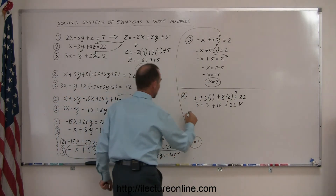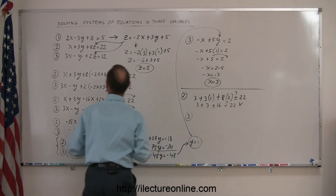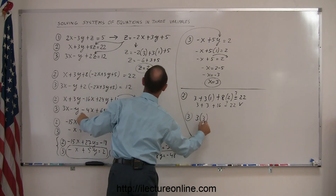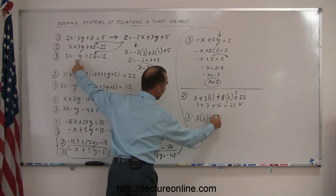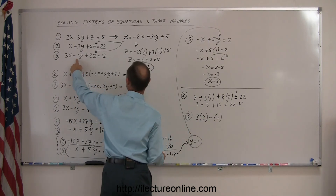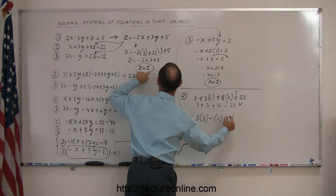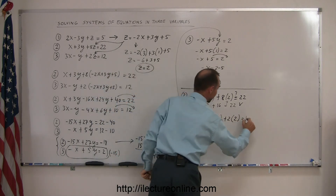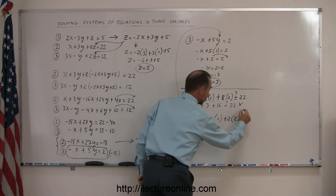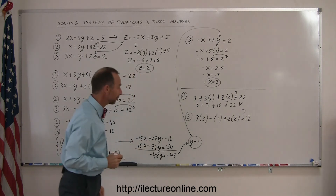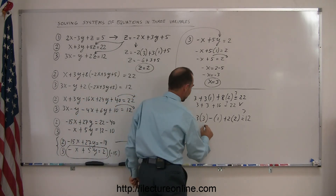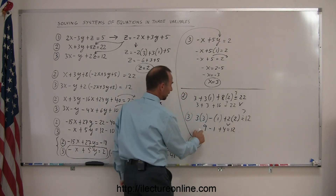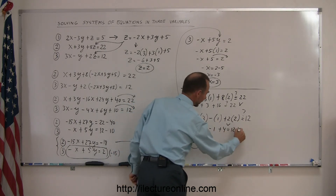Now doing equation number 3: plugging in x, y, and z — 3 times 3 minus 1 plus 2 times 2 should equal 12. Let's check: 9 minus 1 is 8, plus 4 is 12. That's indeed correct.